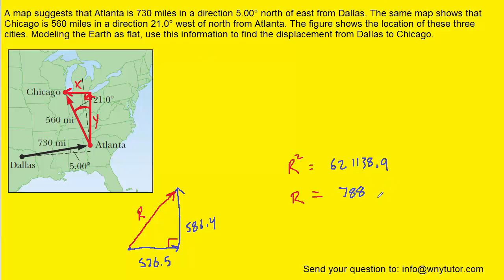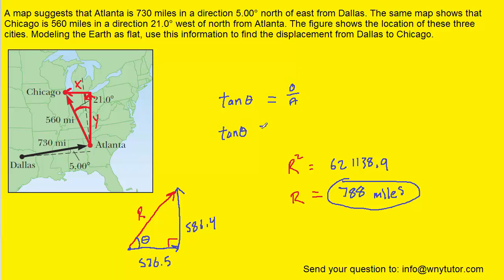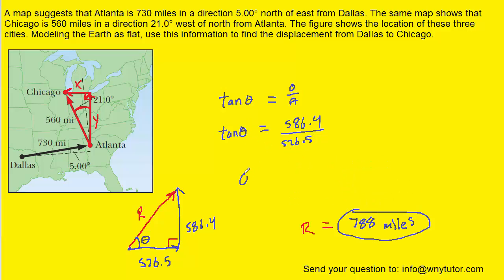Since these distances were measured in miles, the distance directly traveled from Dallas to Chicago is 788 miles. But we also need the angle. Going back to our triangle, we know that the tangent of an angle equals the opposite side divided by the adjacent. The opposite side is 586.4 and the adjacent is 526.5. Taking the inverse tangent of both sides, theta equals the inverse tangent of 586.4 over 526.5, which gives approximately 48.1 degrees.